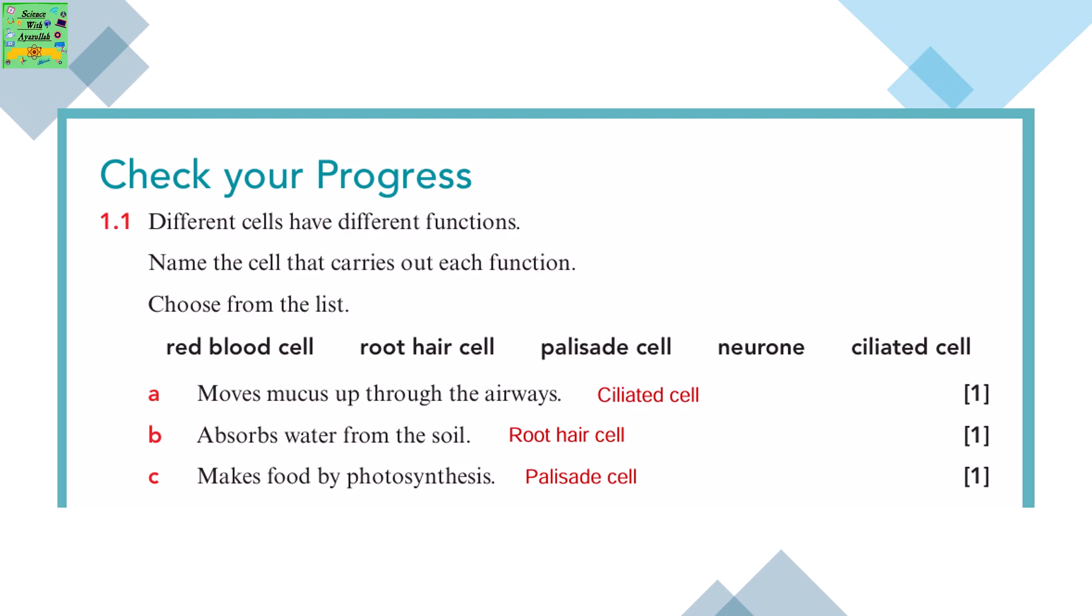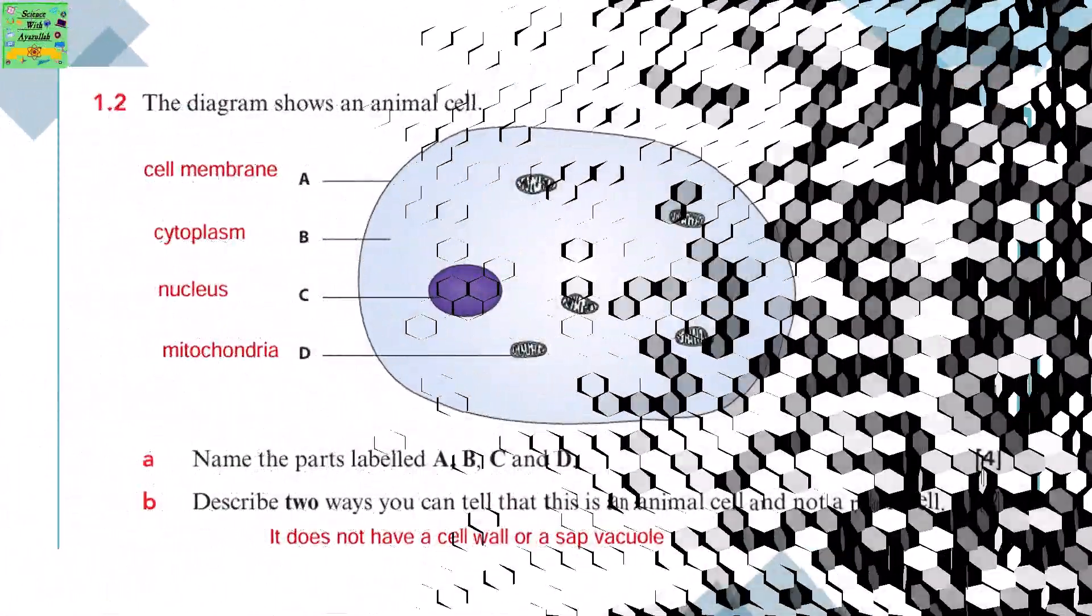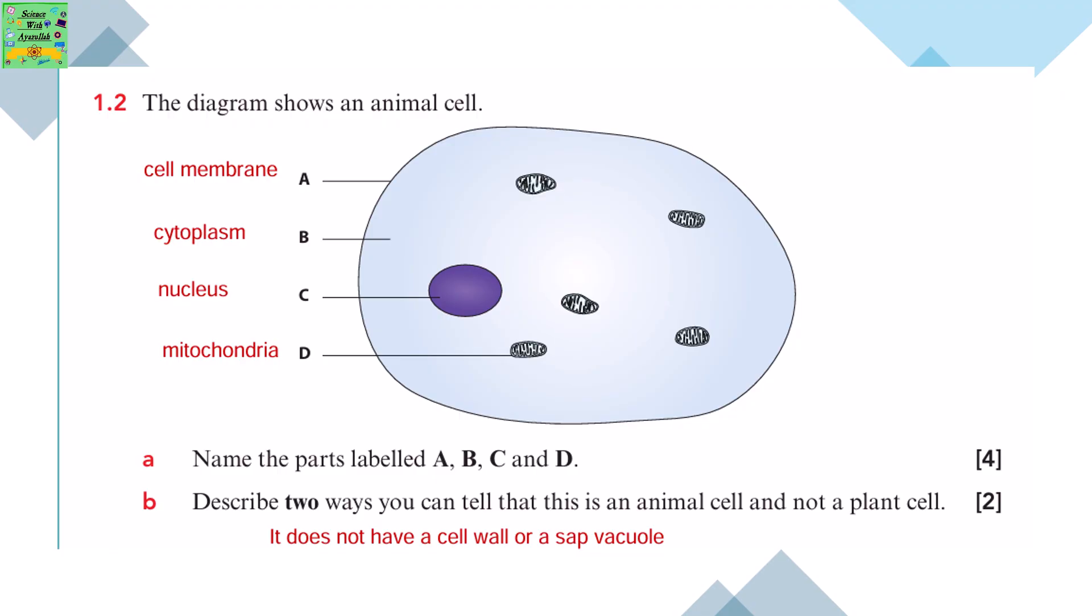Check your progress. Different cells have different functions. Name the cells that carry out each function. Choose from the list: red blood cell, root hair cell, palisade cell, neuron, ciliated cell. Moves mucus up through the airways - ciliated cell. Absorbs water from the soil - root hair cell. Makes food by photosynthesis - palisade cell.